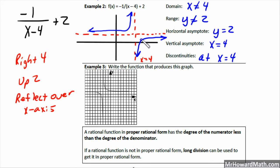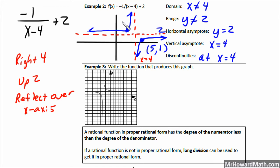We should also plot anchor points. One away in the x direction from the vertical asymptote and one away in the y direction from the horizontal asymptote. The first point is one right of x equals 4 (so x = 5) and one below y equals 2 (so y = 1), giving the point (5, 1). The second point is one left of x equals 4 (so x = 3) and one above y equals 2 (so y = 3), giving the point (3, 3).